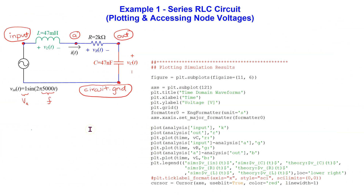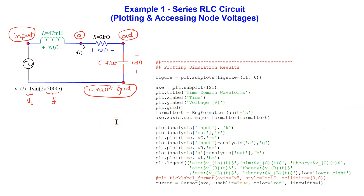The plotting commands for time domain voltage waveforms are shown here. We can access the node voltages using the syntax shown. In order to plot the simulated voltages across the inductor and resistor, we need to subtract node voltages appropriately as shown. We are plotting both the simulation and theory values, and formatting the x-axis using engineering format.